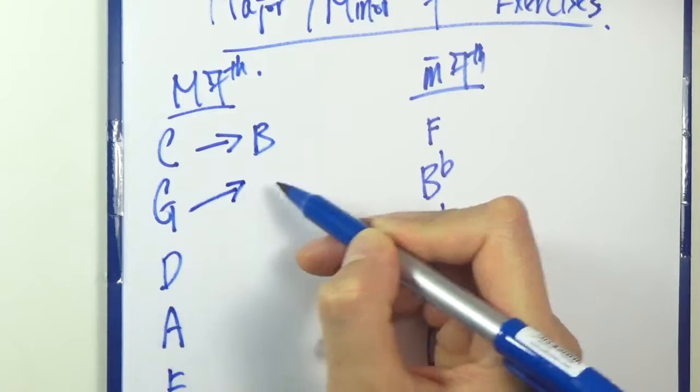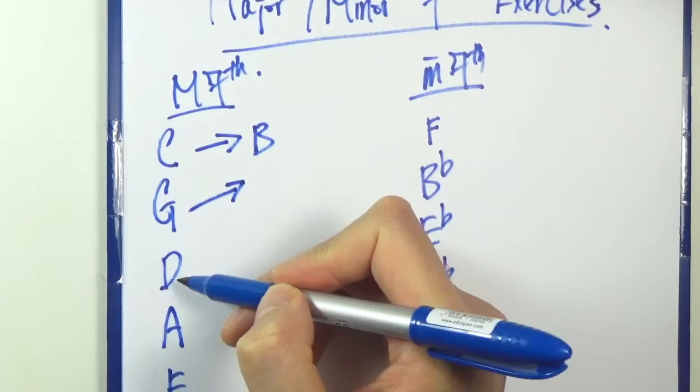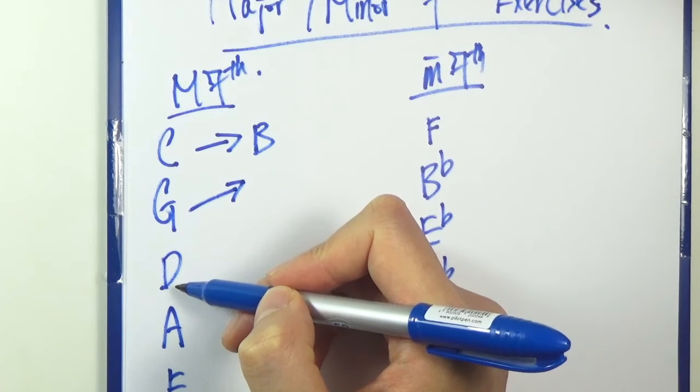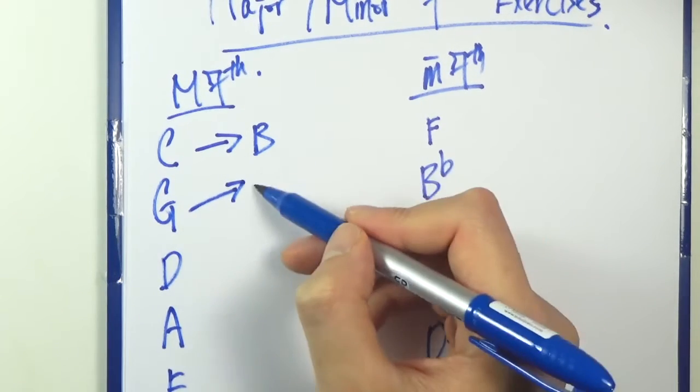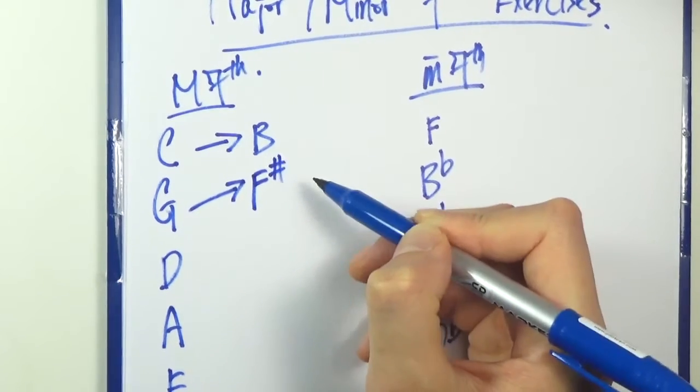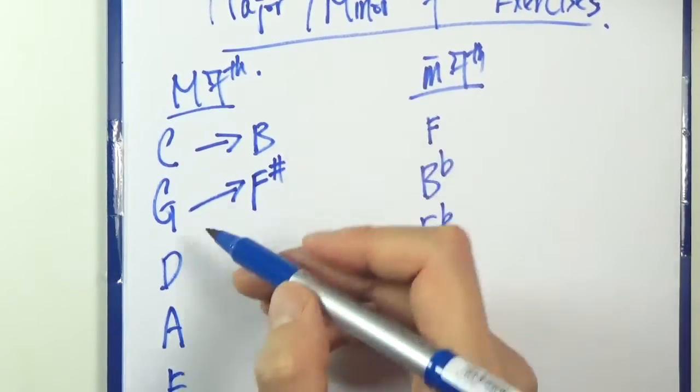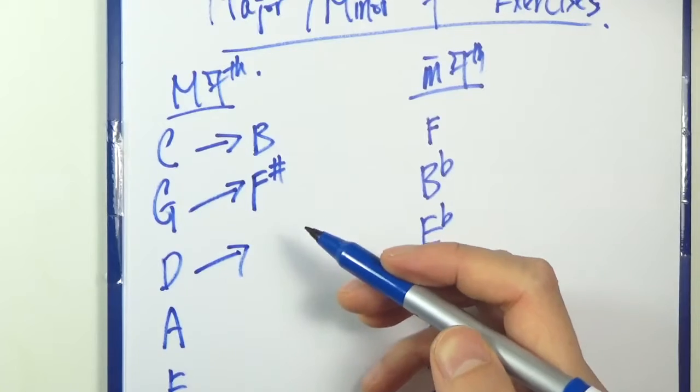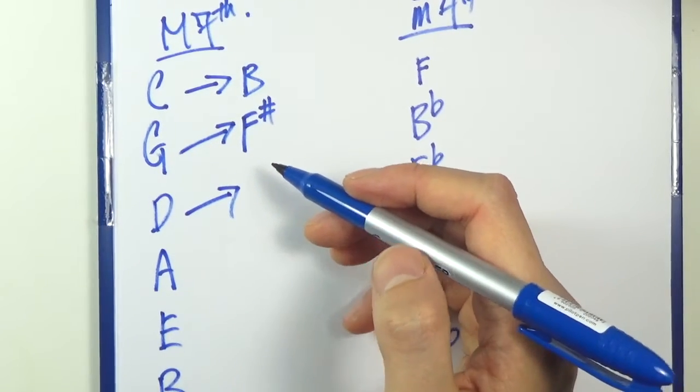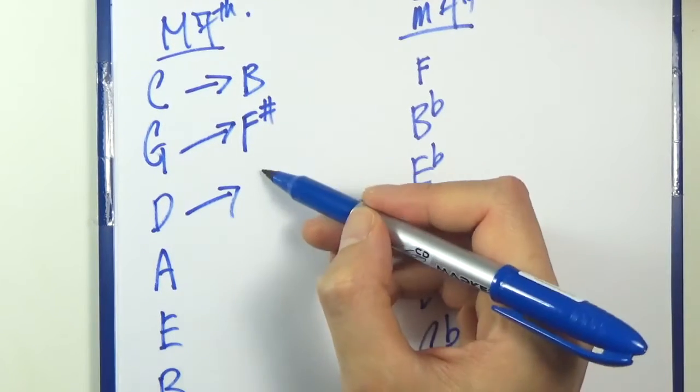So remember, you just go backwards half step. So what's the note that's half step below G? F sharp, right? So F sharp. So D, major 7th. What's the note half step below D? C sharp, right?